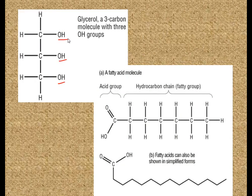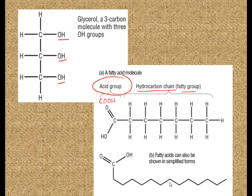Here is a fatty acid molecule. Groups you need to see and know about: this is our acid group, our standard COOH group. And over here we have a hydrocarbon chain — this is our fatty group. It's hydrocarbon just like you'd recognize from GCSE chemistry, lots of Cs and lots of Hs. We can show it in this simplified form, with each corner of this line representing a C and assuming there are as many hydrogens as you can fit into these Cs. This, therefore, is a saturated fatty acid.